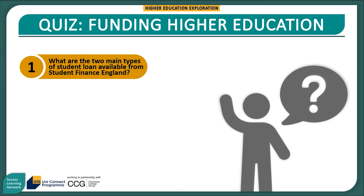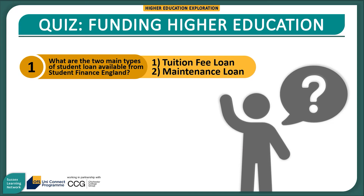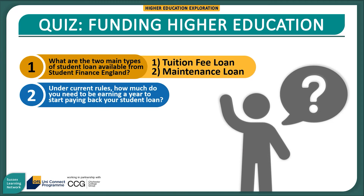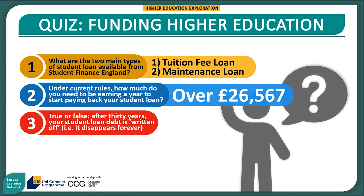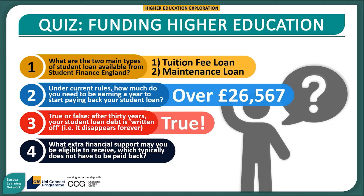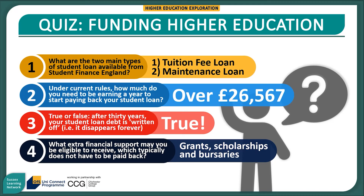First: what are the two main types of student loan available from Student Finance England? These are the tuition fee loan, which pays for your course costs, and the maintenance loan, which pays for living costs such as rent, bills and food. Next: under current rules, how much do you need to be earning a year to start paying back your student loan? This is currently over £26,567 per year. Third, true or false: after 30 years, your student loan debt is written off — it disappears forever. This is true. Last: what extra financial support may you be eligible to receive which typically does not have to be paid back? These are grants, scholarships and bursaries, which may be available via Student Finance England, your higher education provider, and charities.